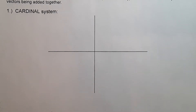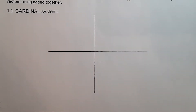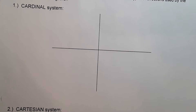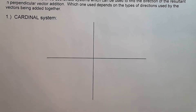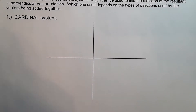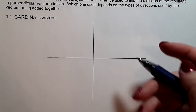However, if you have two perpendicular vectors, it's a little different. We're going to take a look at the two possible coordinate systems we can use to reference our direction. The first is the cardinal system — this is what you know as your geographic direction. If we look at our compass rose on a cardinal system, north is up the paper and south is down the paper.